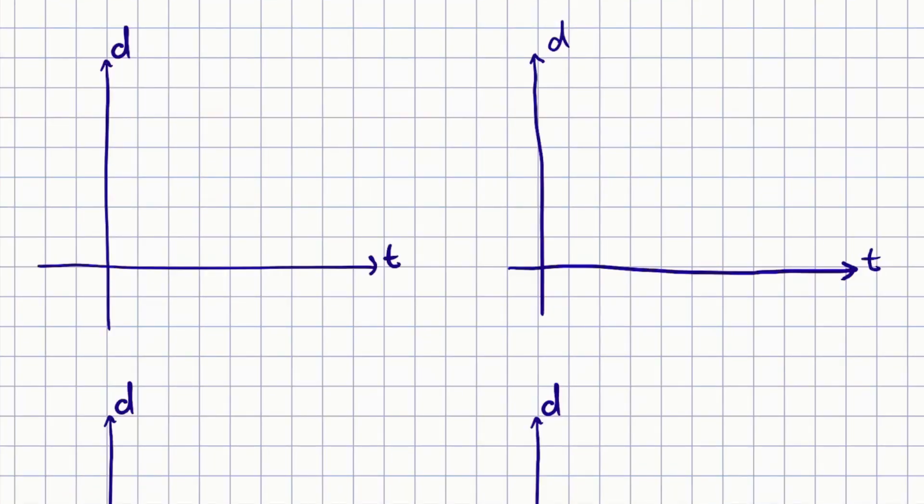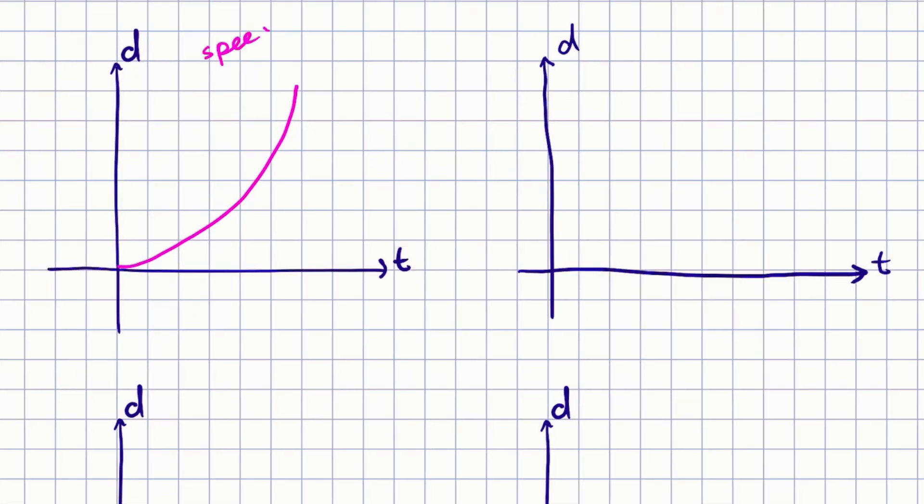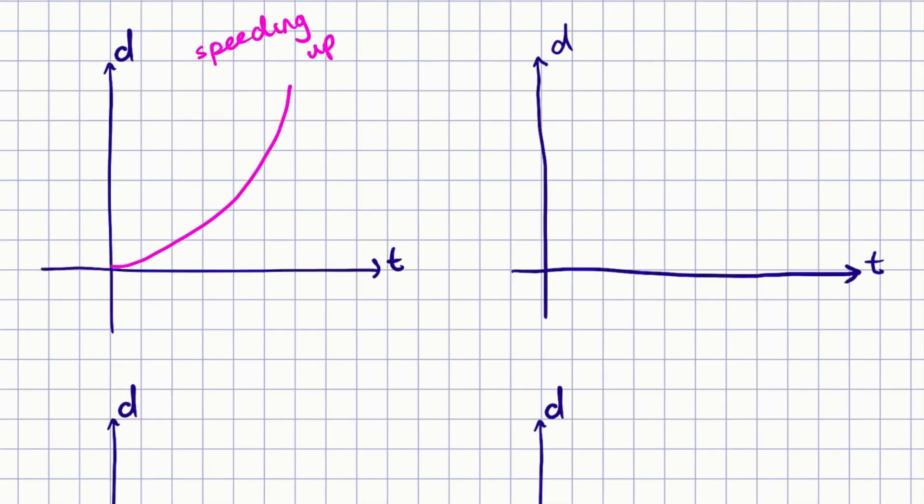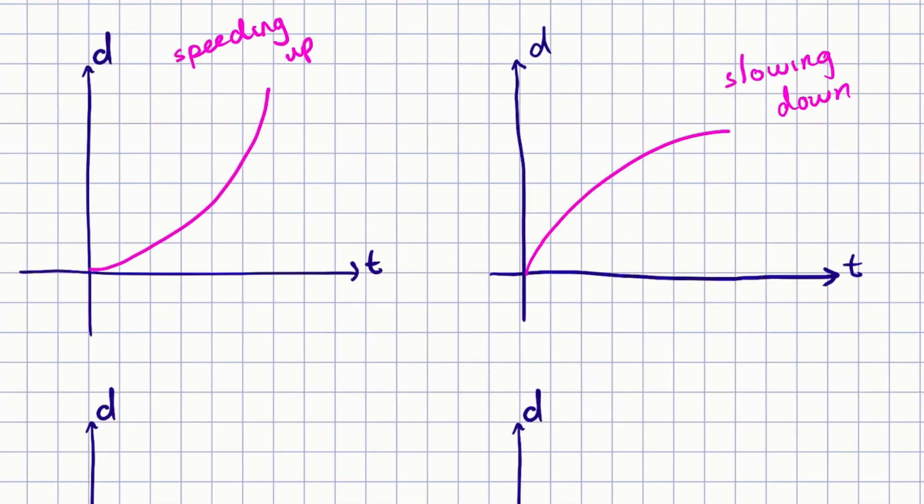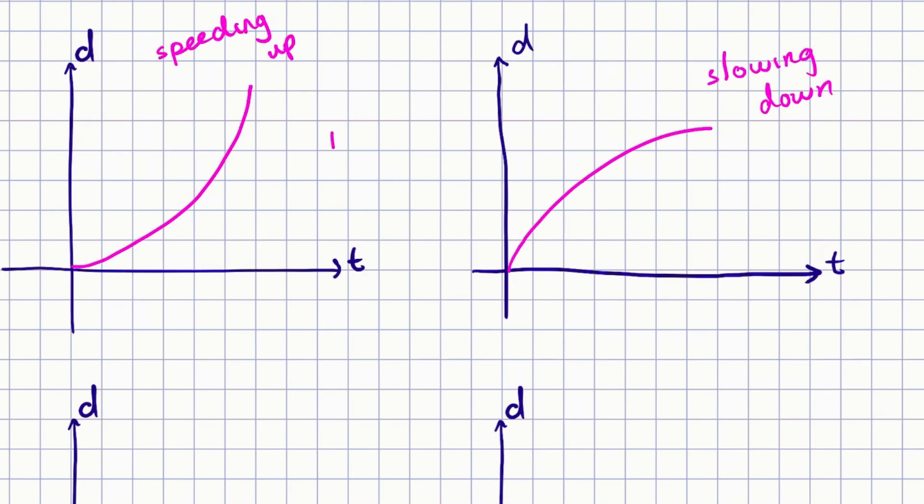As a quick recap, we can have an object that was speeding up, which resembles this position-time graph, and we had slowing down. We might be tempted to think that if a parabola in a position-time graph opens up it will be speeding up, and if the parabola opens down it slows down.